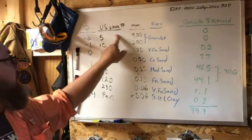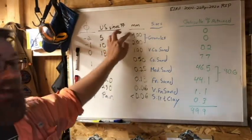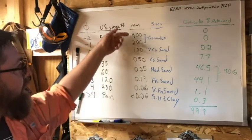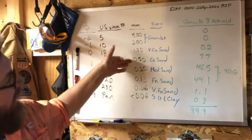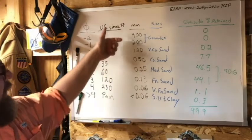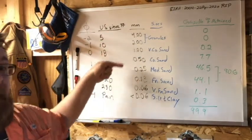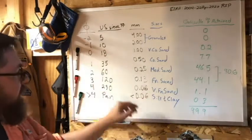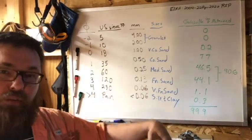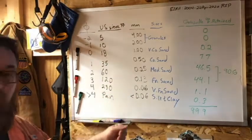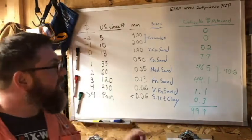The U.S. sieve sizes are standard numbers with their sizes in millimeters. You can see four, two, one, a half, a quarter—this is half of this, this is half of this. It's a lot more logical system. I'm not taking it to a third decimal place, only two.